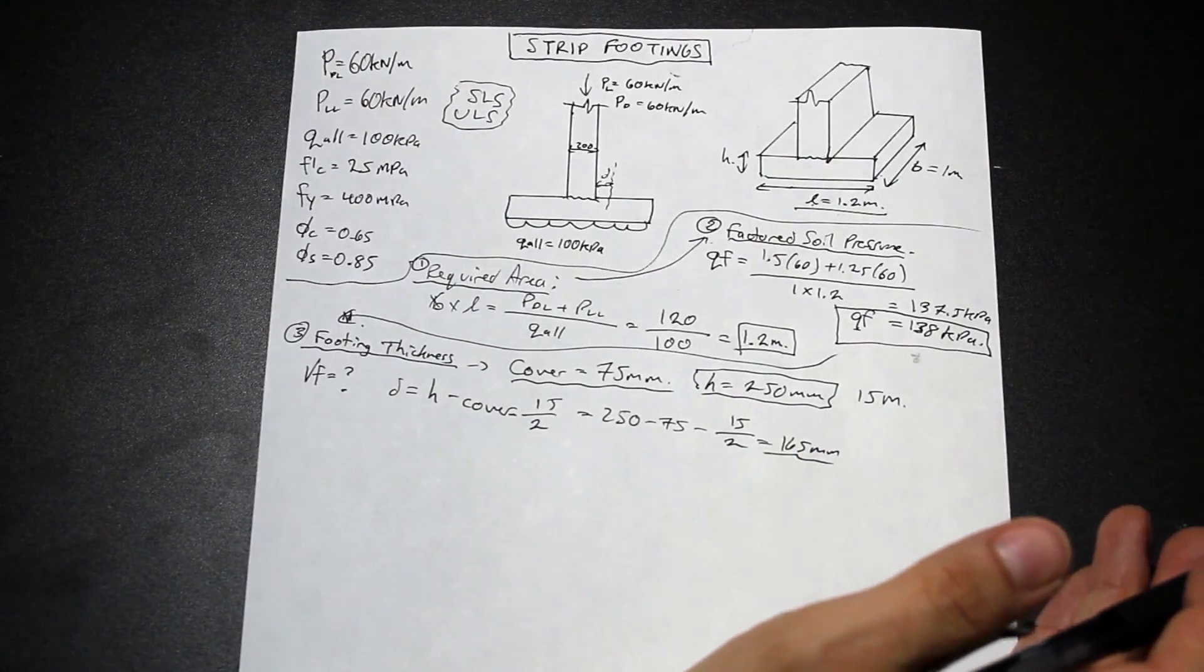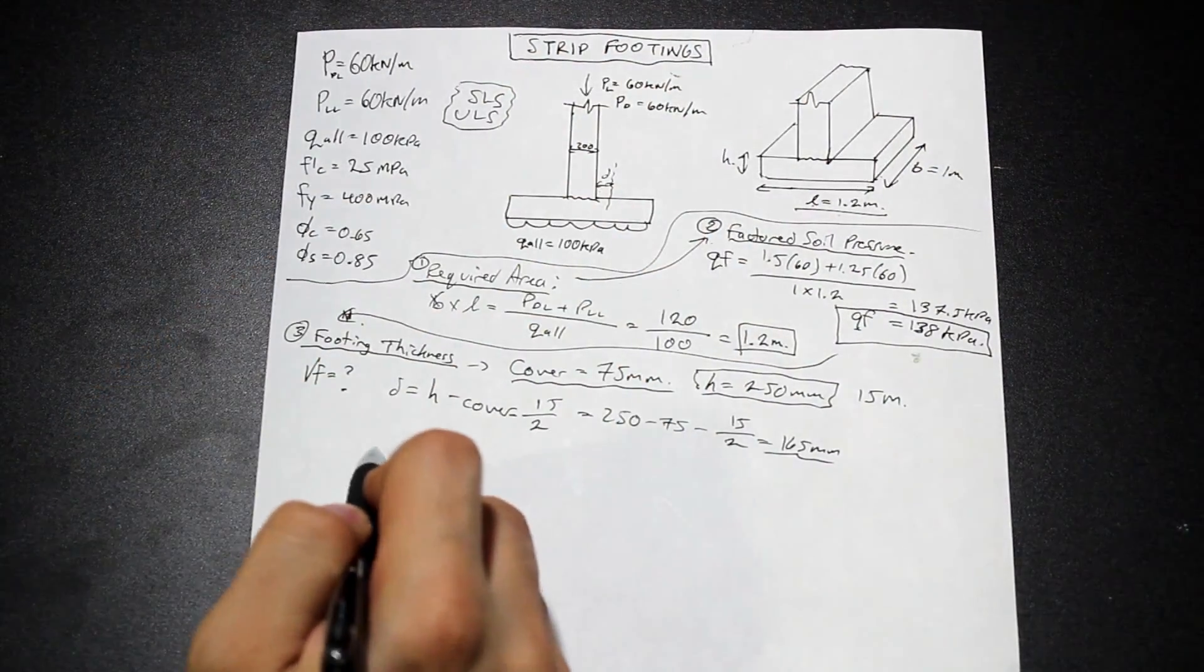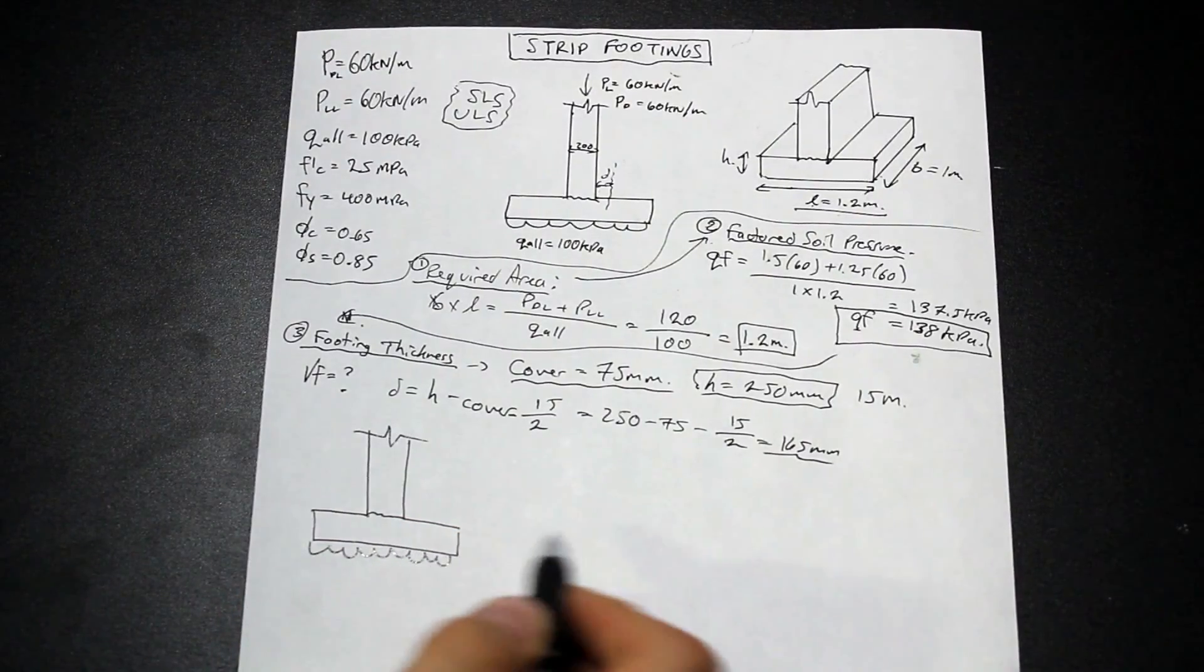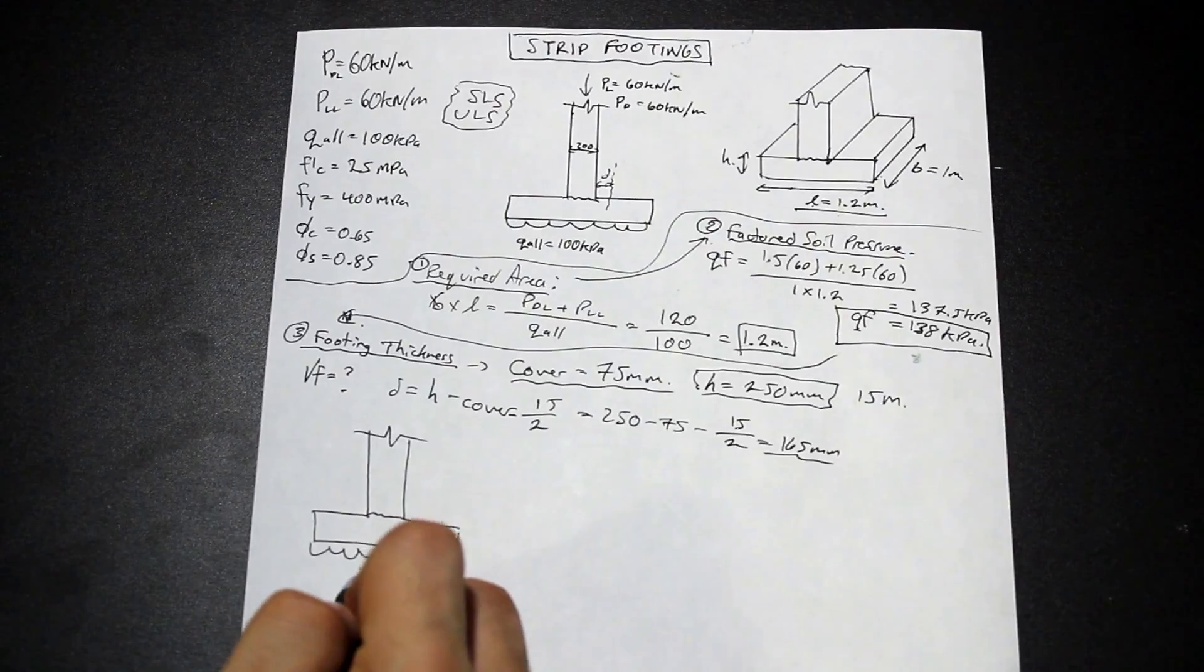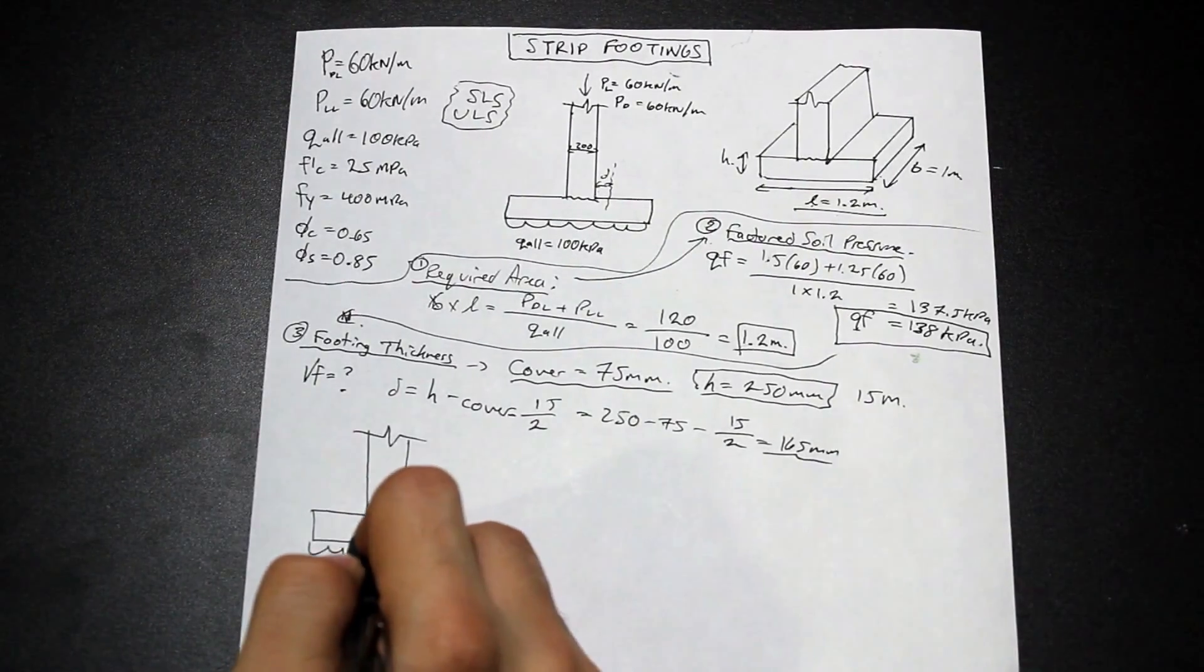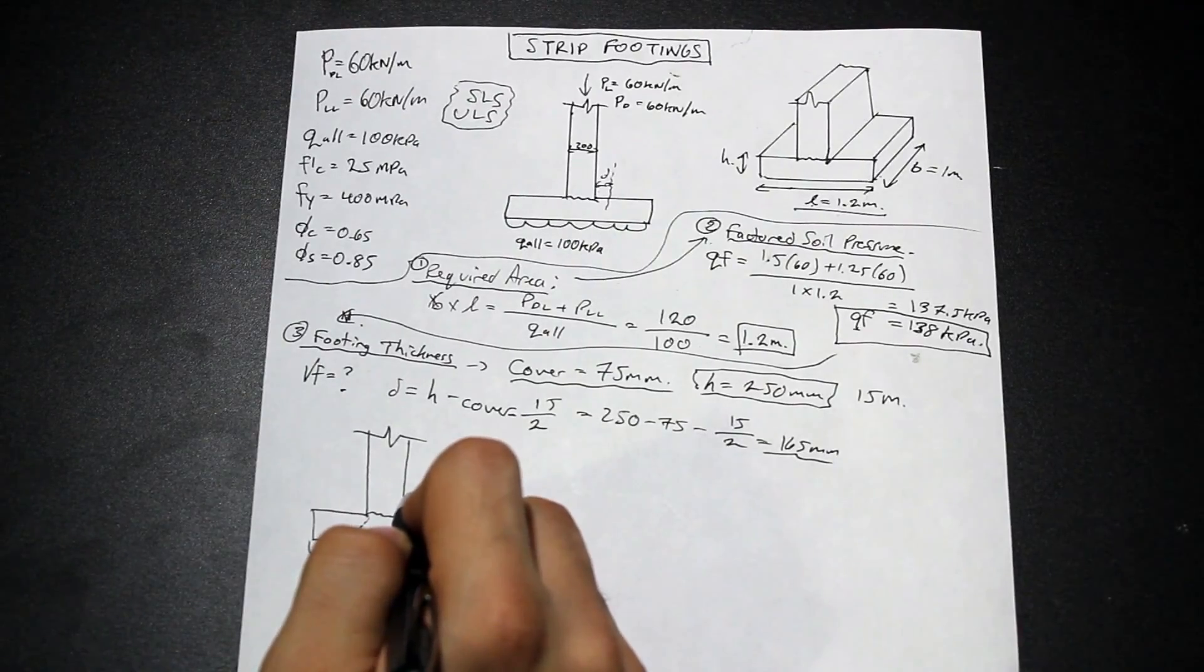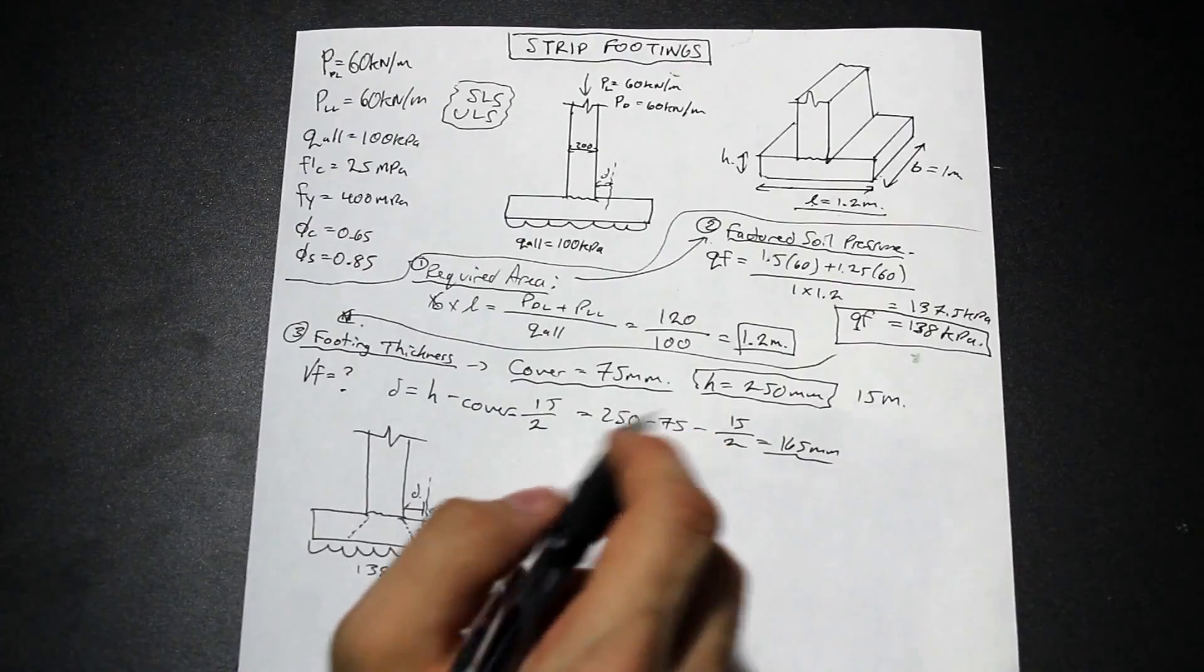Now, let's go ahead and let's find our factored shear force at the critical section. So D from the face. And what does that look like? Well, we're going to have our footing here. We have our pour break. And we have our factored bearing, our factored soil pressure, which we found to be 138 kPa. And we have kind of the shear plane here.